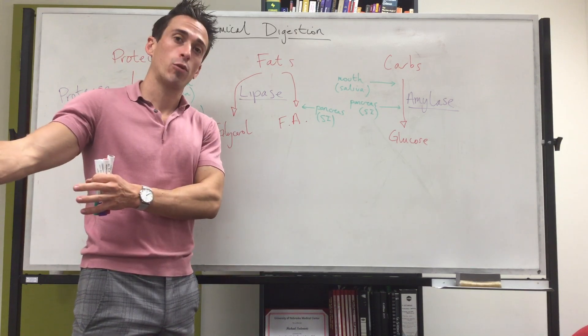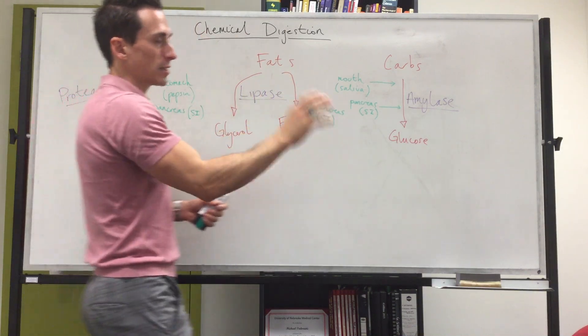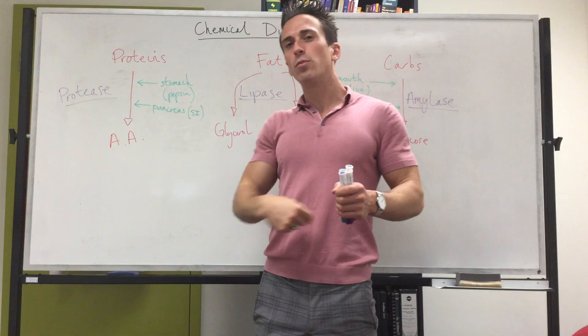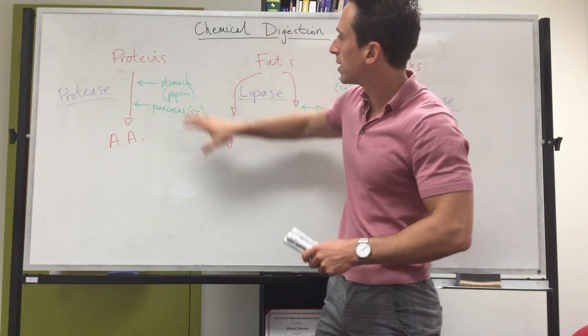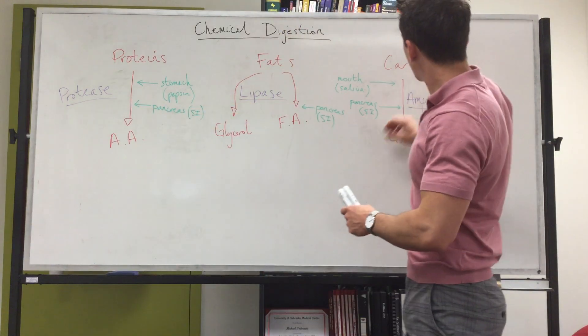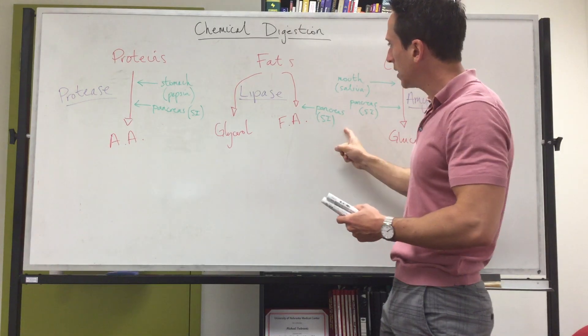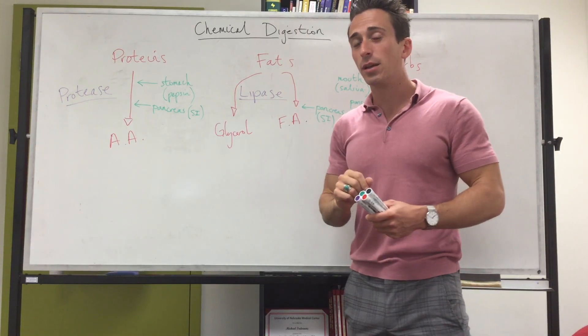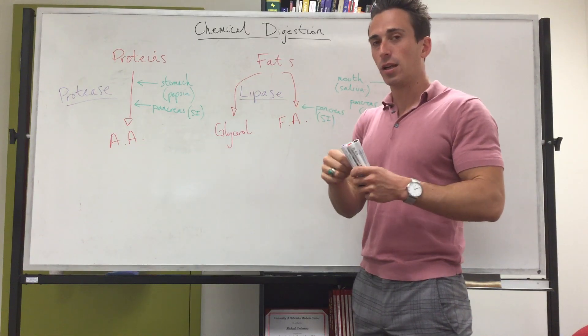Now here are the major sites. There's also some cells within the small intestines called brush border cells, and they release some proteases and some amylases as well, but not lipases. You can see how important the pancreas is for fats to be digested.